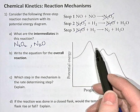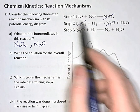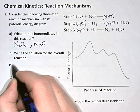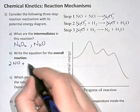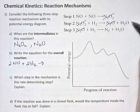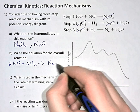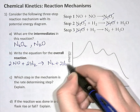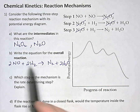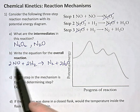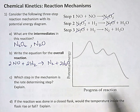Anything that we didn't cancel out is considered the overall reaction. On the reactant side we have two NOs — NO plus NO — and then we have two hydrogens. On the right-hand side we have N2 and two waters. The order you write them in doesn't matter; you could write 2H2 + 2NO → 2H2O + N2.